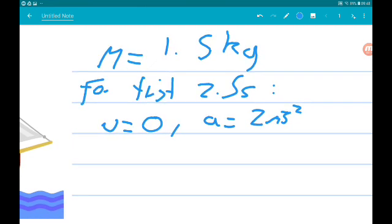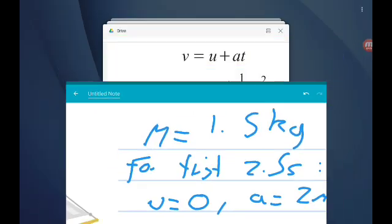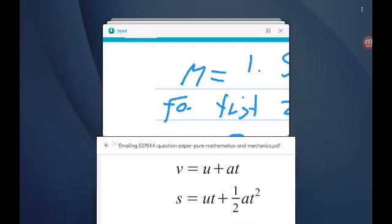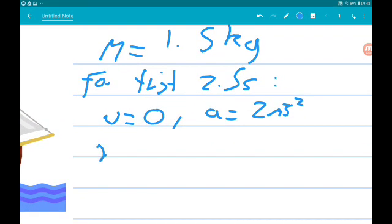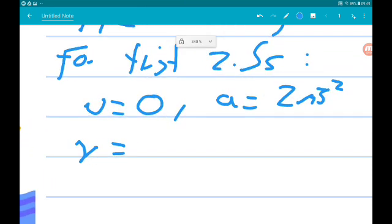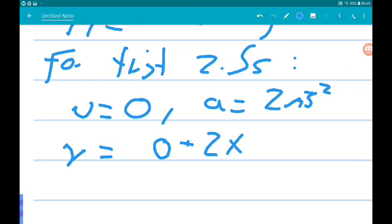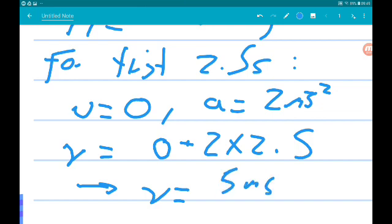So we can work out the final velocity of the boat at the point when it stops being pushed. So given all of the SUVAT equations, what we want is v. So v is u plus at. So v is 0 plus 2 times 2.5, which is 5 meters per second.